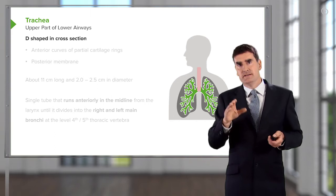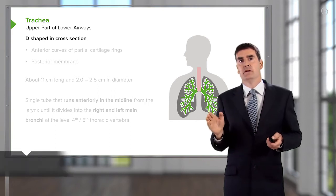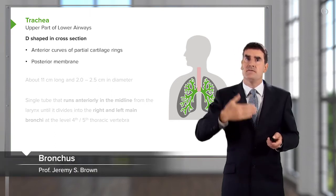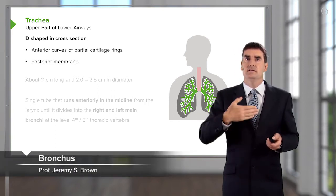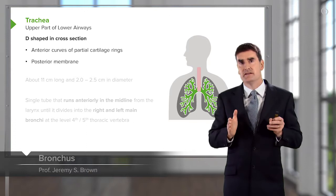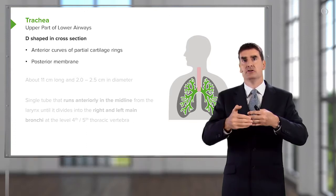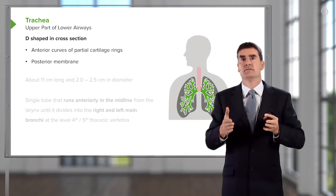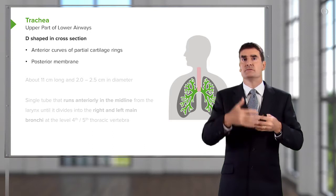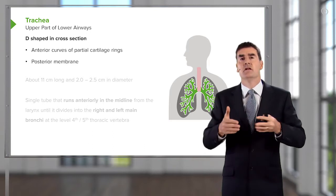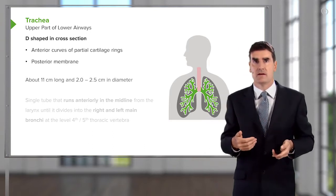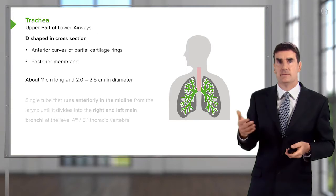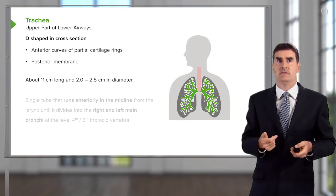The trachea is a D shape in cross-section, so posteriorly there's a flat fibrous bit, anteriorly there are cartilage curves with muscle and fibrous insertion, with fibrous layers in between. It's about 11 centimeters long and a couple of centimeters in diameter.